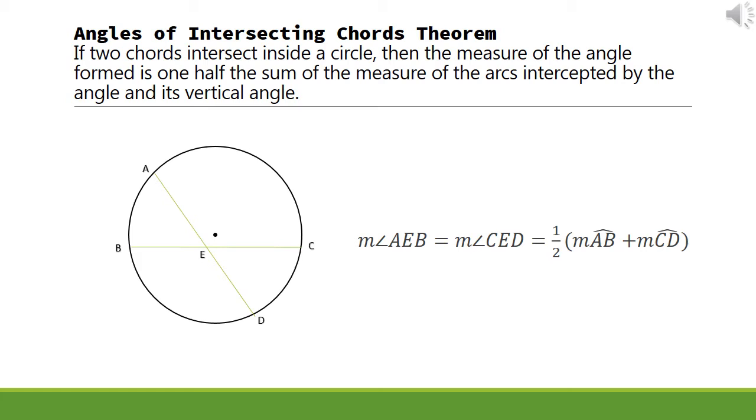If two chords intersect inside a circle, then the measure of the angle formed is one-half the sum of the measure of the arcs intercepted by the angle and its vertical angle.